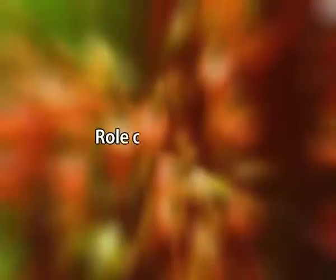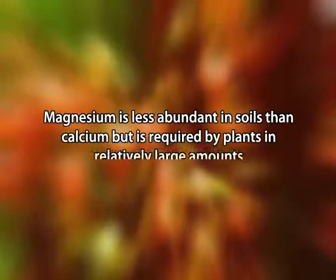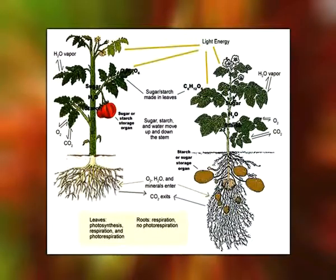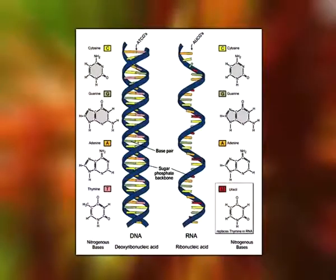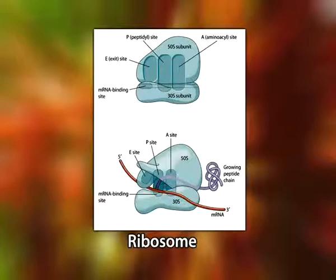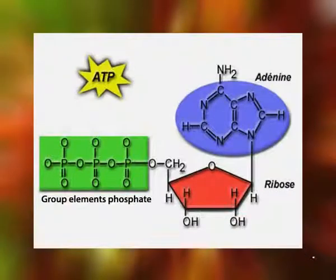The next important macronutrient is magnesium, also taken up as the divalent cation Mg²⁺. Magnesium is generally less abundant in soils than calcium but is required by plants in relatively large amounts. In plants, magnesium has a specific role in the activation of enzymes involved in respiration, photosynthesis, and the synthesis of DNA and RNA. It is also part of the ring structure of the chlorophyll molecule and is required to stabilize ribosome structure. It is critical to reactions involving ATP, where it serves to link the ATP molecule to the active site of the enzyme.